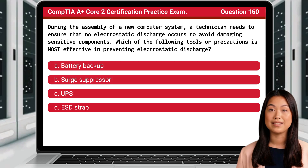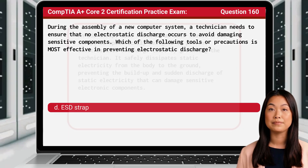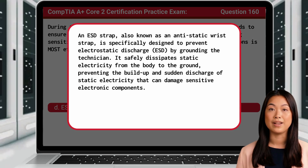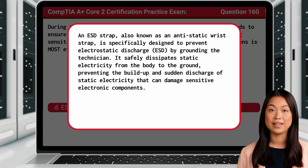The answer is D, ESD strap. An ESD strap, also known as an anti-static wrist strap, is specifically designed to prevent electrostatic discharge by grounding the technician. It safely dissipates static electricity from the body to the ground, preventing the buildup and sudden discharge of static electricity that can damage sensitive electronic components.